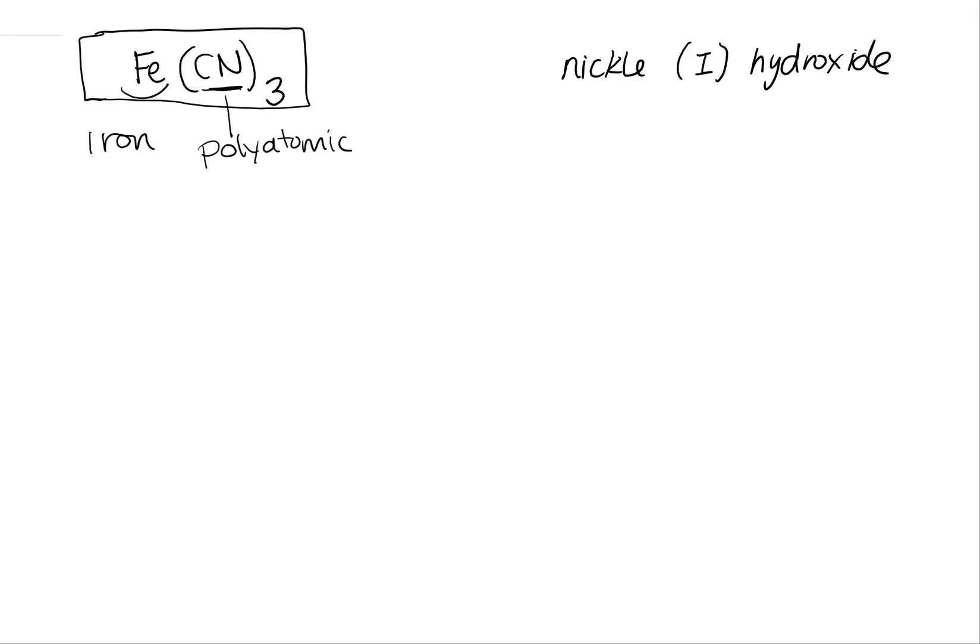And I might not have this memorized, but I can recognize that I have more than one non-metal in my chemical formula. So if I recognize it's a polyatomic ion, and I go check it on the polyatomic ion chart, I can see this is cyanide.